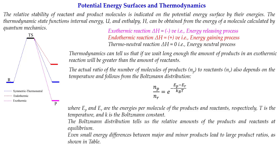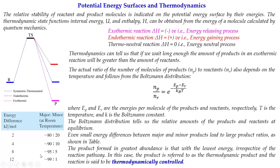The Boltzmann distribution can tell us the relative populations of products and reactants at equilibrium. It can also tell us the relative distributions of different products when multiple products form in a single reaction — sometimes one major product and a few minor products. These ratios can be computed from the potential energy surface using energy differences. Such major/minor product ratio tables are common in experimental papers and organic chemistry textbooks.